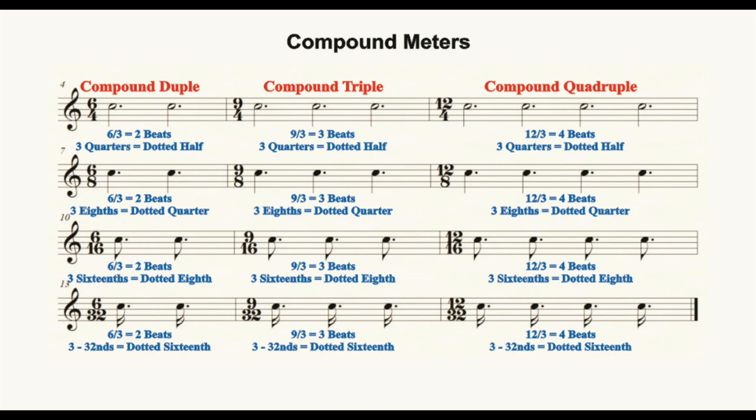In 12/16, 12 divided by 3 equals 4 beats and 3 sixteenth notes combined to a dotted eighth. And in 6/32, 6 divided by 3 equals 2 beats and 3 thirty-second notes combined to a dotted sixteenth note.